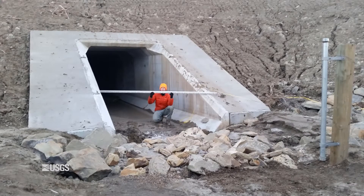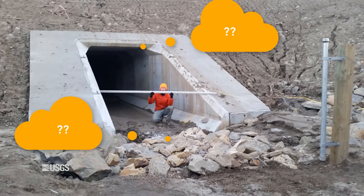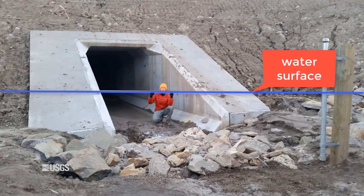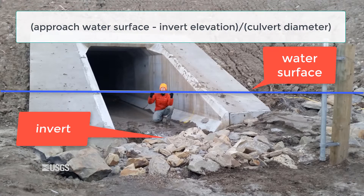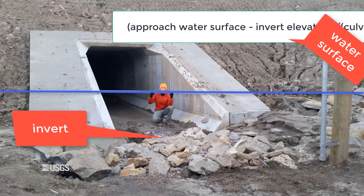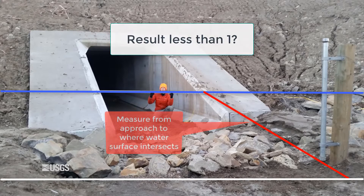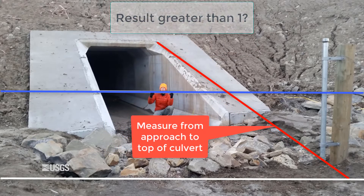The question of the length from the culvert for the approach also arises. Should you measure from the top of the culvert entrance or the bottom? This one requires a little math — don't worry, it's easy. Take the water surface elevation at the approach and subtract the elevation at the invert, or the bottom of the culvert entrance. Now divide this number by the culvert diameter. If the result is less than 1, then measure the distance using a tape from the approach to where the water surface first intersects with the culvert entrance. If the number calculated is greater than 1, then measure the distance using a tape from the approach to the top of the culvert.